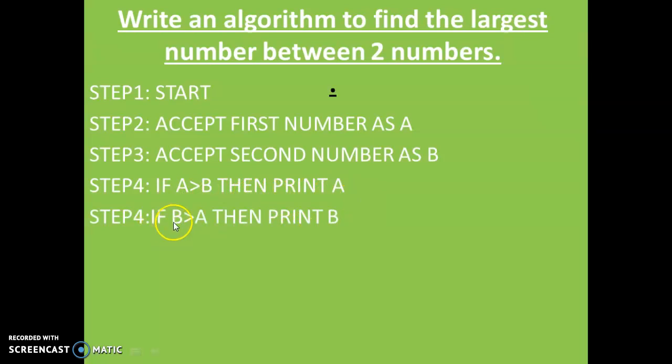Step four, if it is not true, that means if A is not greater than B, here you can write down else also. Else then print B. Or you can check it again that if B greater than A, then print B. So if A greater than B, print A. If B greater than A, print B. Because you have to print largest one.